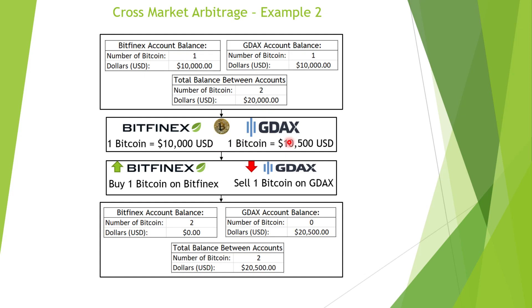We also know that holding investments on exchanges is risky. I personally don't hold anything on an exchange, but to pull this arbitrage off, I need to have coin on an exchange — there's no two ways around it. These exchanges get hacked. These exchanges can get locked up for a couple of days. We've seen Kraken be down for a day or two — there's a whole bunch of lost opportunity when that happens and the risk of your money being stolen.